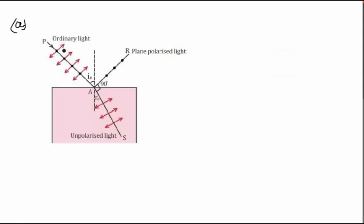So here this ordinary light which is not polarized, from point P it is incident at point A, and then what happens is due to this reflection when this incident light is incident at an angle which is equal to the Brewster's angle.